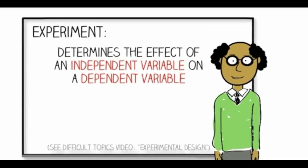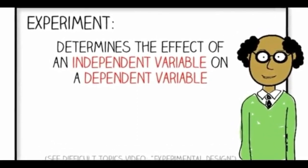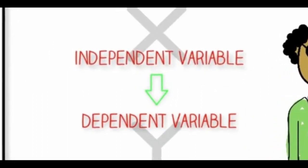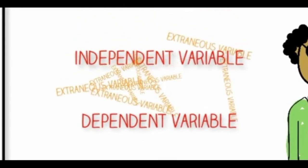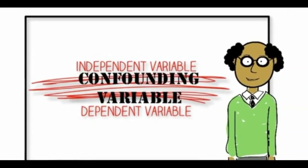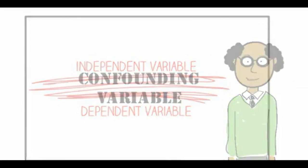In a perfect experiment, only the independent variable would have any effect on the dependent variable. But life and experiments are rarely perfect. Extraneous variables are often present in an experiment and may or may not compromise the validity of the experiment. An extraneous variable that affects the validity of an experiment is referred to as a confounding variable. To better understand what this means, let's take an experiment that's been done in grade schools for generations.